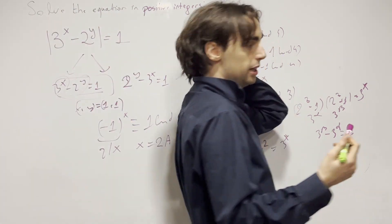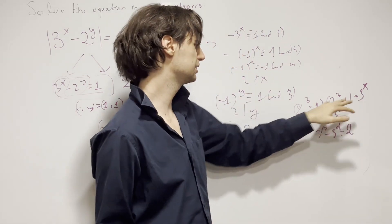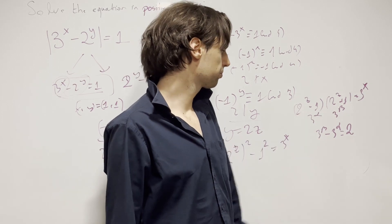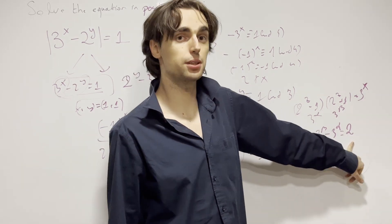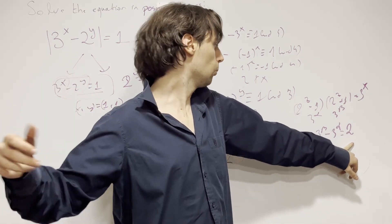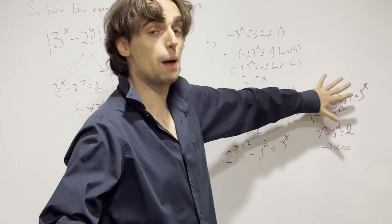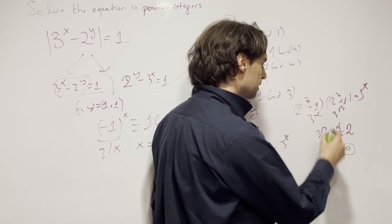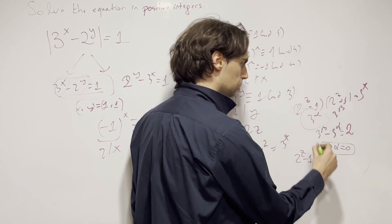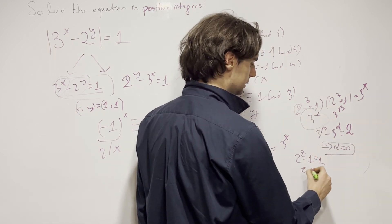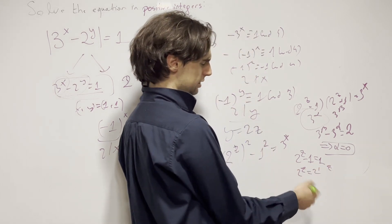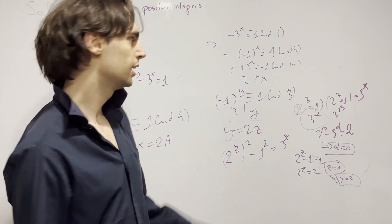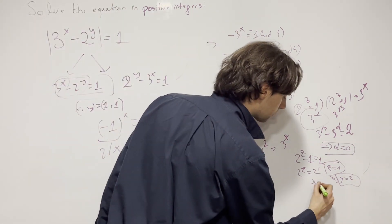If alpha were greater than or equal to 1, this would be divisible by 3, and then we'd need 2 to be divisible by 3 — but 2 is not divisible by 3. So alpha equals 0. Then 2 to the z minus 1 equals 3 to the 0, which is 1. So 2 to the z equals 2, meaning z equals 1, which means y equals 2. And y equals 2 gives us x equals 1.